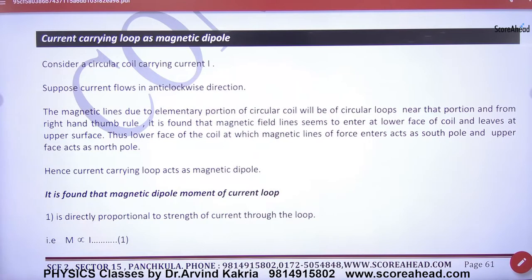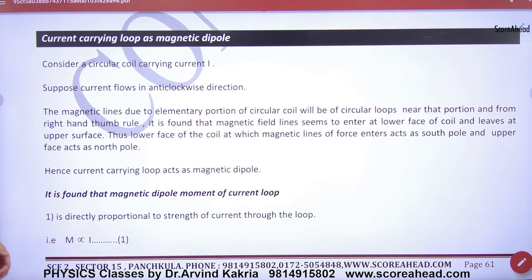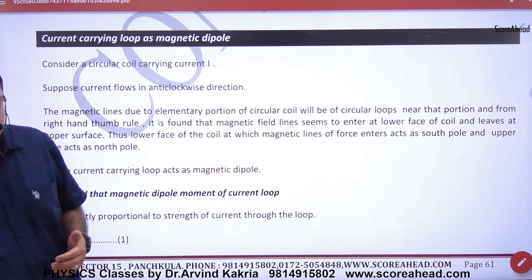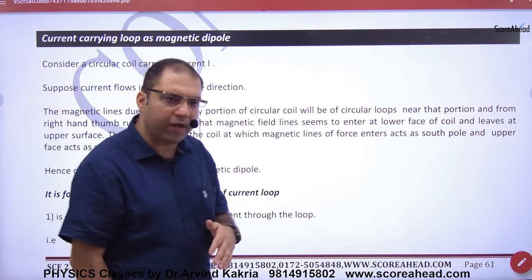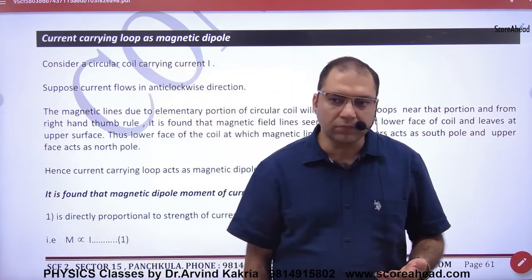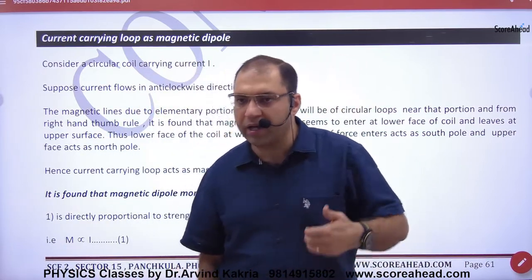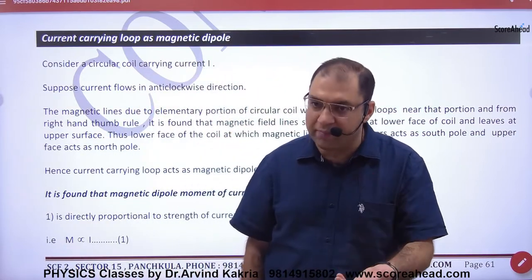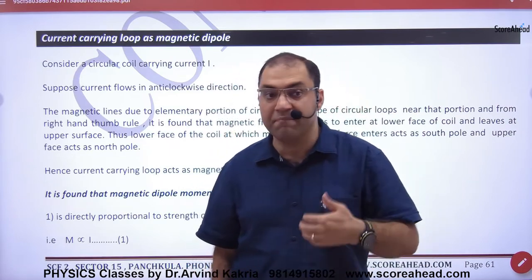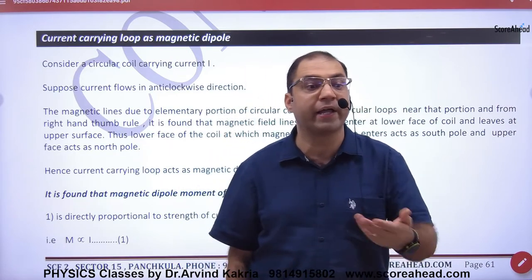Now, the current-carrying loop is a magnetic dipole. It has been established that the loop generates a magnetic field, we imagine poles, and since poles are generated and B is generated, it works like a magnet. Therefore we discuss the magnetic dipole moment.